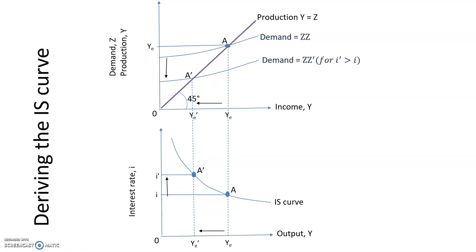Using Figure A, we can find the equilibrium output associated with any value of the interest rate. The resulting relation between equilibrium output and the interest rate is drawn in Figure B, which plots equilibrium output Y on the horizontal axis and the interest rate on the vertical axis. Point A in Figure B corresponds to point A in Figure A, and point A' in Figure B corresponds to A' in Figure A. The higher interest rate is associated with a lower level of output, and this downward-sloping curve in Figure B is called the IS curve.